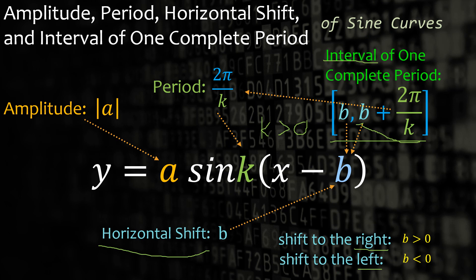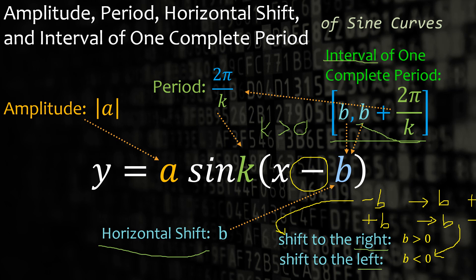To give a clue: whenever we see a minus sign, so whenever we have minus b, then we are talking about a positive value of b. A plus b indicates a negative value of b, so that will fall under shifting to the left. But when we have minus b and the value of b is positive or greater than zero, then the graph is shifted to the right by b units. That is the number of units where the graph is shifted to the left or to the right.